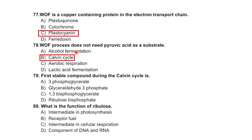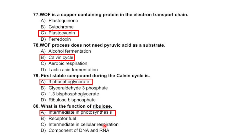The first stable compound during the Calvin cycle is 3-phosphoglycerate, glyceraldehyde-3-phosphate, 1,3-bisphosphoglycerate, or ribulose bisphosphate — correct option is 3-phosphoglycerate. The function of ribulose in photosynthesis is as a CO2 receptor; it also serves as a fuel intermediate in cellular respiration and as a component of DNA and RNA — DNA contains deoxyribose and RNA contains ribose.